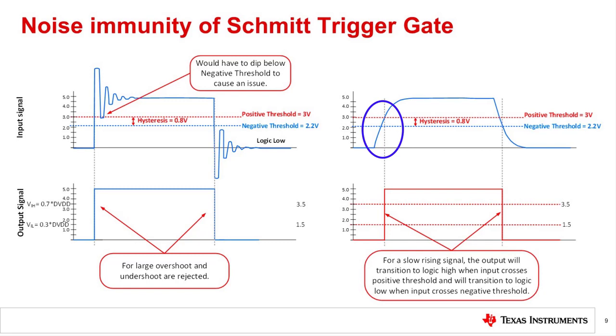One possible solution to solving a data integrity issue is to place a Schmidt trigger buffer at the end of a noisy digital signal line. Of course, a better solution is to use optimal layout methods to avoid crosstalk and overshoot that cause communication problems. Nevertheless, the Schmidt trigger may be a fast solution in cases where this is not practical.